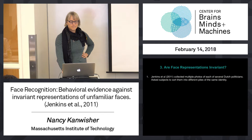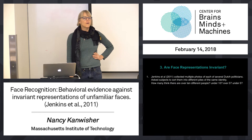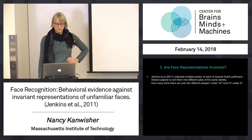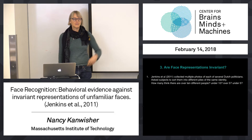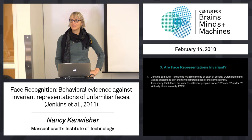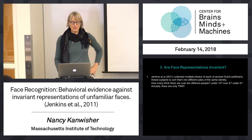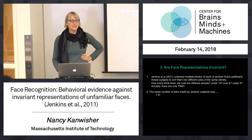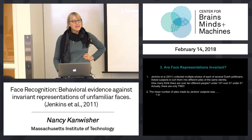Okay, everybody got a sense? How many people think there are over 10 individuals in that array? Raise your hand if you think there are over 10. One. How many people think there are over five? Looks like most of you. How many people think they're under five? One. You're the only one who's right — there are two. Two individuals in the whole array. You guys did exactly what Jenkins' subjects did. The mean number of piles that Jenkins' subjects made was seven and a half.